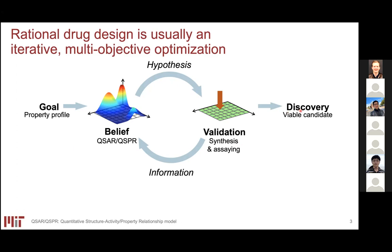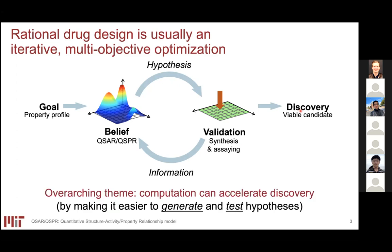A lot of the work we do in the group relates to using computation to accelerate discovery — in the broadest sense, including computational chemistry, cheminformatics, data science, machine learning, and laboratory automation. We use computation both for generating and testing hypotheses.